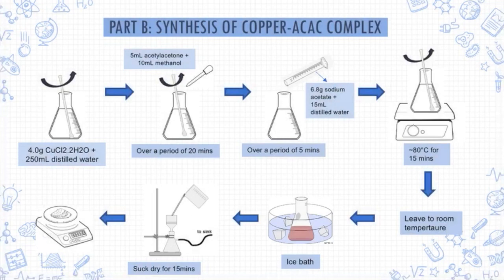For Part B, the synthesis of copper acetylacetonate complex: hydrated copper(II) chloride was dissolved in distilled water. Next, acetylacetone in methanol was added dropwise with constant stirring maintained throughout the addition. A solution of sodium acetate was then added, and the mixture was heated on a hot plate with continuous stirring. The mixture was left to cool and then cooled in an ice bath, and the resulting precipitate was filtered off by suction.